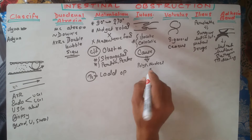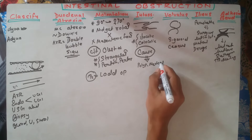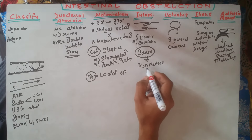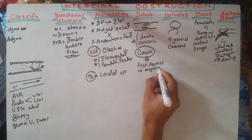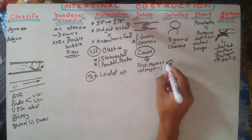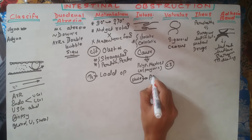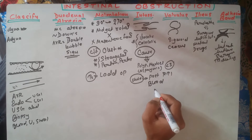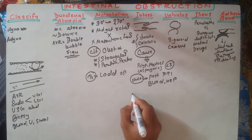In patients less than three years, causes of intussusception include lymphoid hyperplasia or Meckel's diverticulum. Meckel's diverticulum is the persistence of the vitello-intestinal duct (also called the omphalo-mesenteric duct), which communicates between the yolk sac and the midgut. If it persists beyond six weeks it forms a diverticulum called Meckel's diverticulum. Other causes include polyp and lymph node enlargement, usually in Peyer's patches.